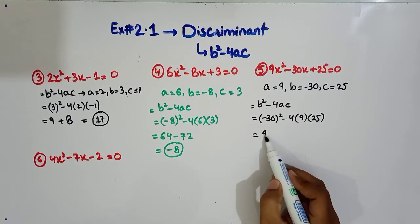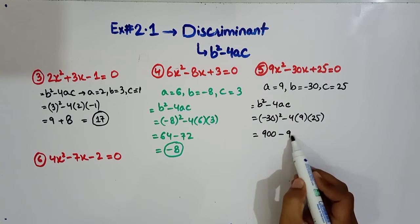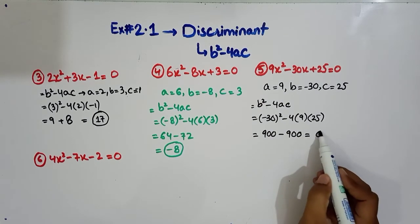Now 30 square, 900. Now we will multiply this and we will get 900, then the answer will be 0.